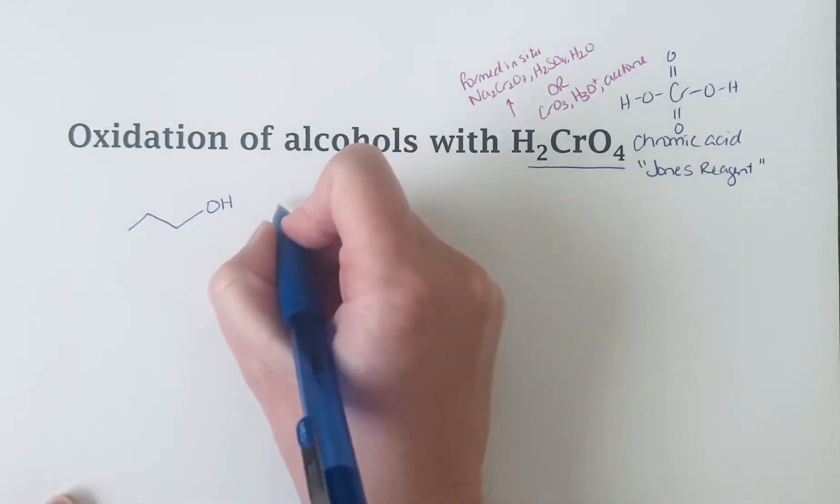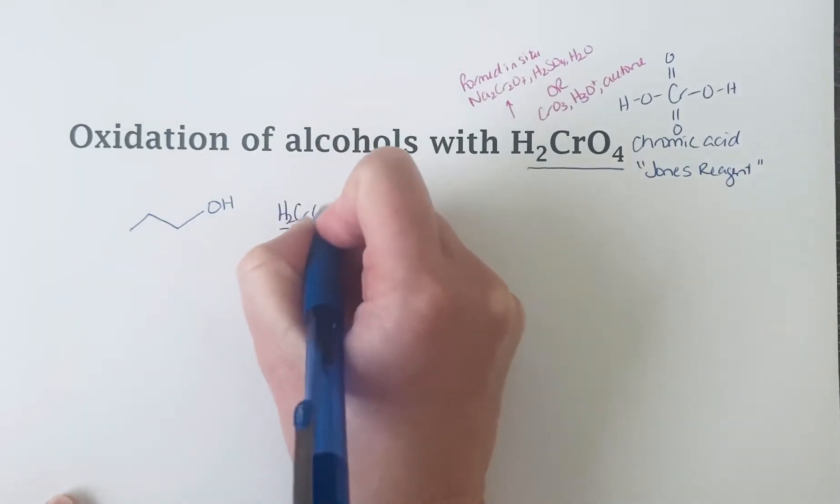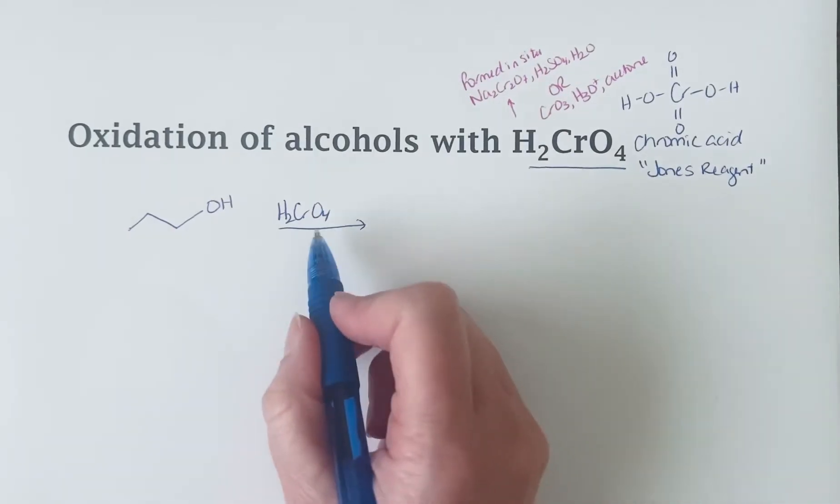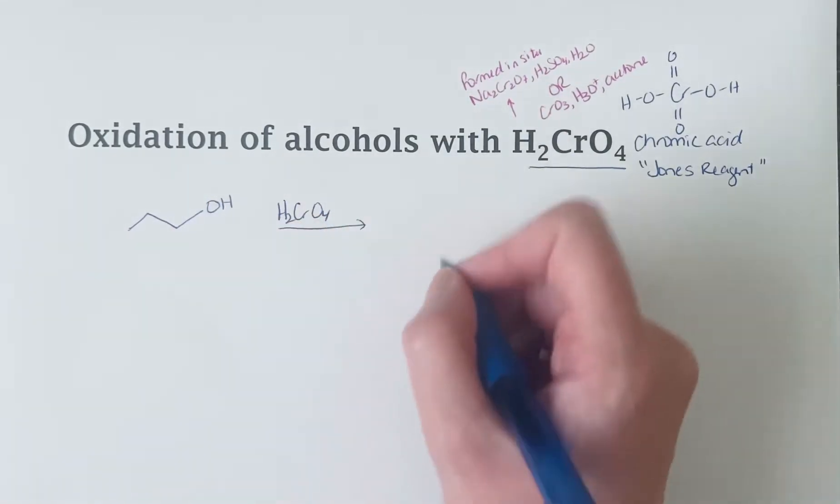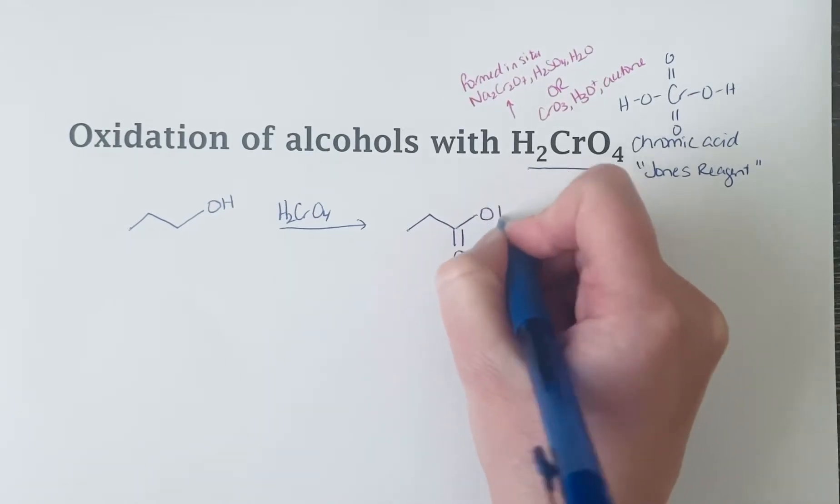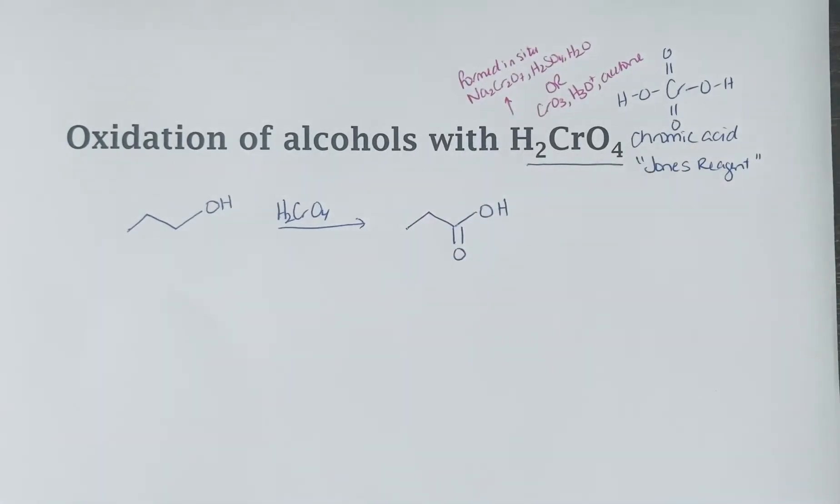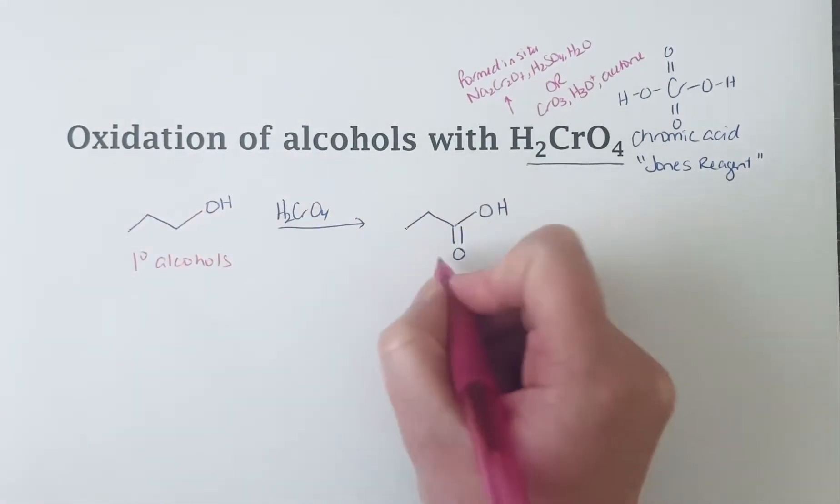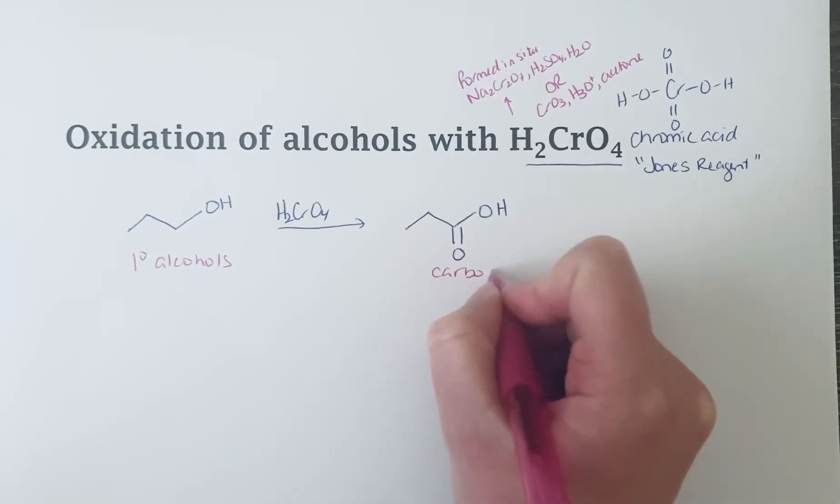and you react it with Jones reagent conditions, these are really powerful oxidizing conditions. So what it's going to do is it's going to oxidize a primary alcohol all the way to a carboxylic acid. So primary alcohols under these conditions get oxidized to carboxylic acids.